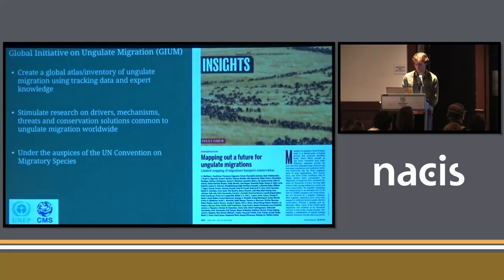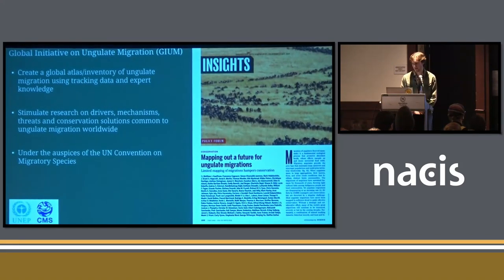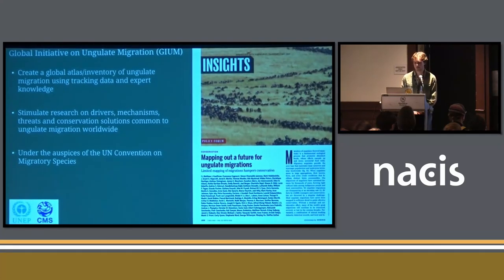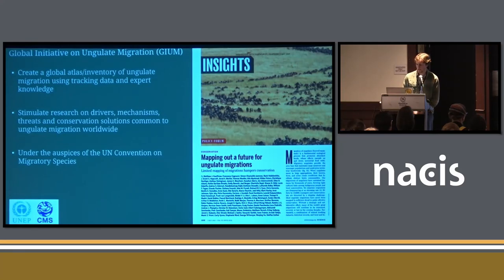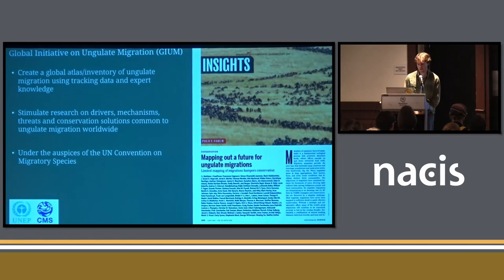This is how we came to the Global Initiative on Ungulate Migration. A large group of scientists and conservationists formed what we call GUME in 2020. The goal is to create a global atlas or inventory of ungulate migration using tracking data and expert knowledge, and to stimulate research on drivers, mechanisms, threats, and conservation solutions common to ungulate migration worldwide. In a Science article published in 2021, they laid out the foundation for this initiative, and that it would be held under the auspices of the United Nations Convention on Migratory Species as the best neutral and respected source to host this data.